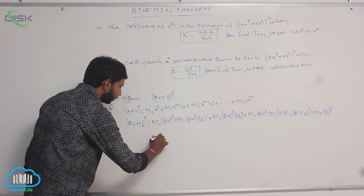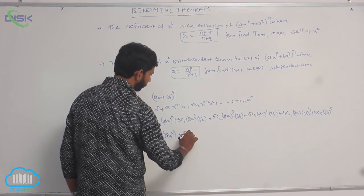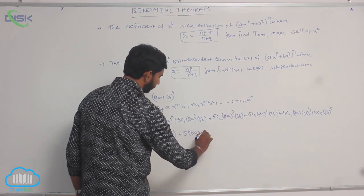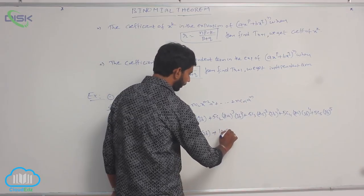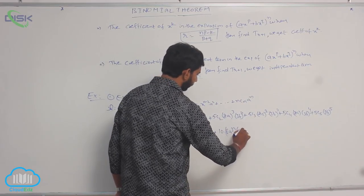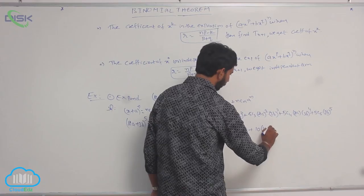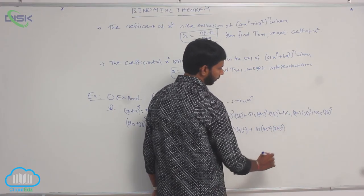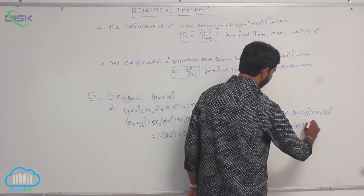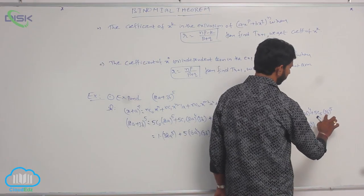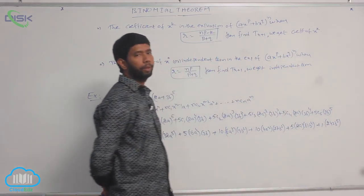Here 5C0 is 1, so 1 times 32a power 5, plus 5C1 is 5, so 5 times 16a power 4 times 3b, plus 5C2 is 10, so 10 times 8a cubed times 9b squared, plus 5C3 is 10, so 10 times 4a squared times 27b cubed, plus 5C4 is 5, so 5 times 2a times 81b power 4, plus 5C5 is 1, so 1 times 243b power 5. Now simplify the value.